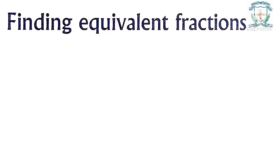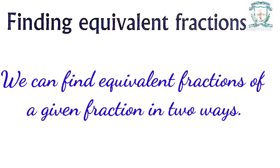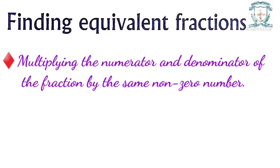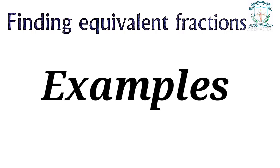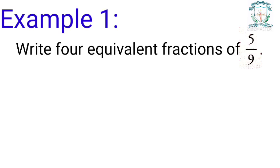Finding equivalent fractions: we can find equivalent fractions of a given fraction in two ways. The first way: multiplying the numerator and denominator of the fraction by the same non-zero number. The second way: dividing the numerator and denominator of the fraction by the same non-zero number which is a factor of both. Let us understand this with an example. Example 1: write four equivalent fractions of five by nine.